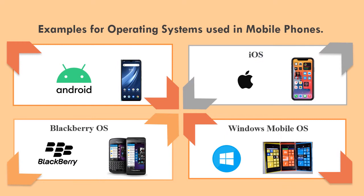Examples of operating systems used in mobile phones: Android, iOS, Blackberry OS, and Windows Mobile OS.